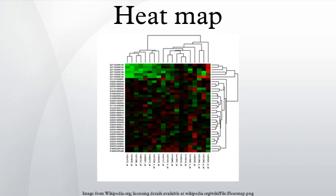Heat maps originated in 2D displays of the values in a data matrix. Larger values were represented by small dark gray or black squares and smaller values by lighter squares.